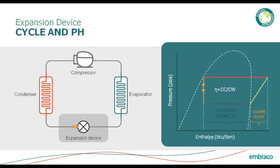Our expansion device simply takes that high pressure liquid and reduces the pressure. It could be something as simple as a capillary tube or a thermostatic expansion valve. All it does is restrict the refrigerant flow to reduce the pressure.